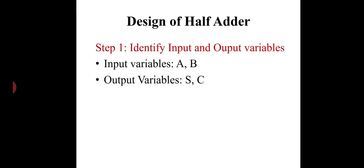Step number one is to identify input and output variables. Here, I need two inputs and two outputs. As shown in the previous slide, we have taken two inputs as A and B. Therefore, the input variables are A and B which are either 0 or 1, and output variables are S and C which are sum and carry.